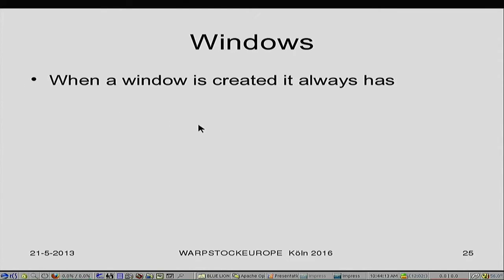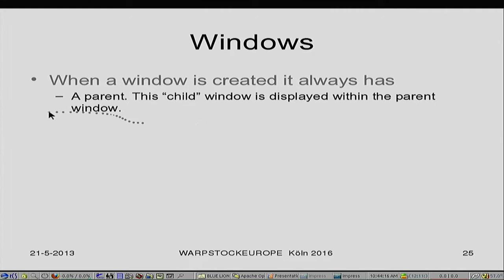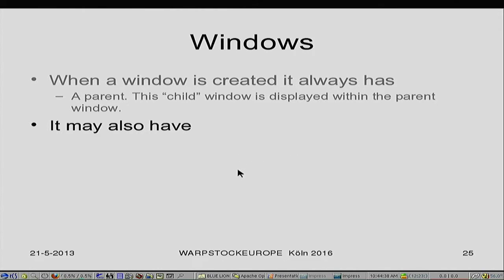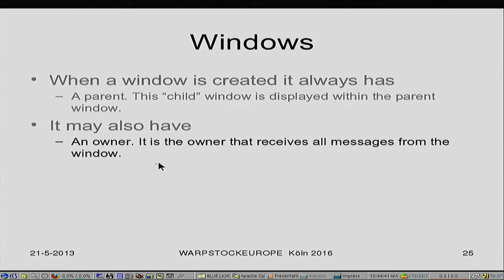When a window is created, it has a parent — this is the parent-child relationship within windows. The child window is always displayed within the parent. What you generally see in a program: you have a window, and you can only have windows within the window. It also has an owner — it is the owner of the window that gets the messages.